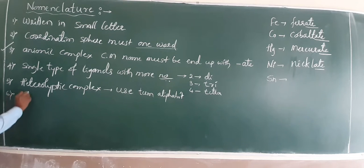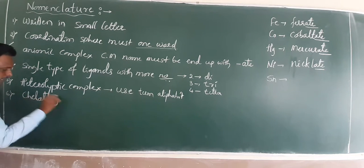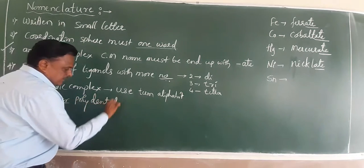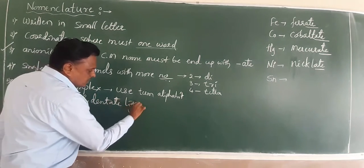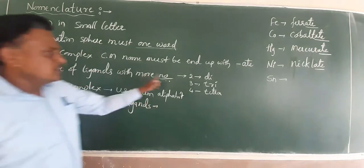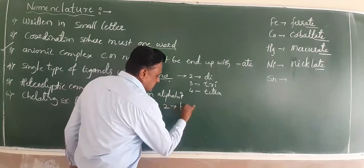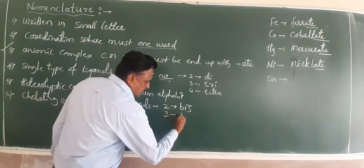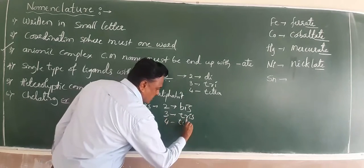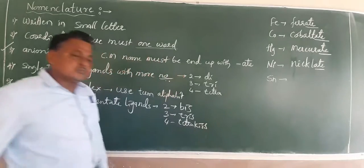For chelating or polydentate ligands, different prefixes are used. If you have 2 chelating ligands, use bis; 3 is tris; and 4 is tetrakis. These are the terms used for chelating or polydentate ligands such as ethylenediamine.